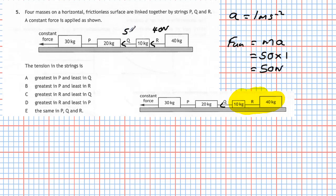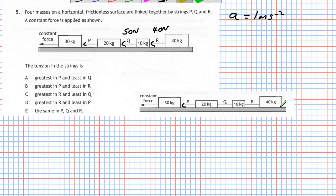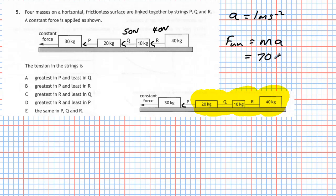For the tension in string P, we isolate the 40 kg, 10 kg, and 20 kg boxes together — a combined mass of 70 kg. Using F = ma: tension in P equals 70 kg × 1 m/s² = 70 newtons.